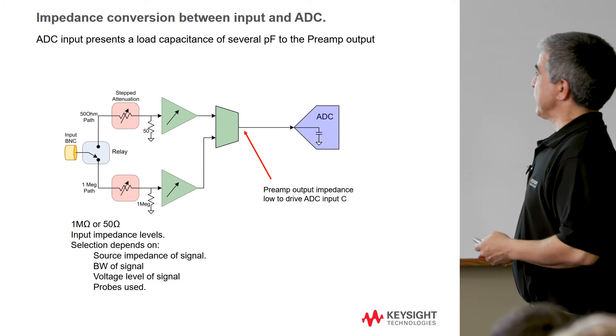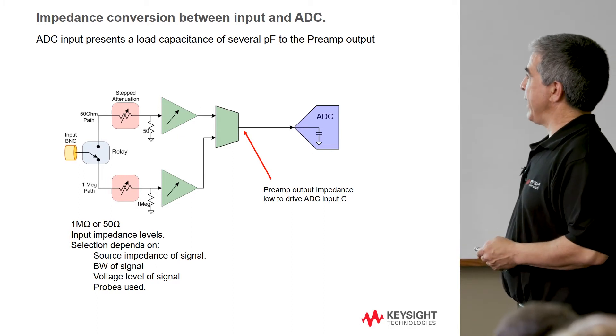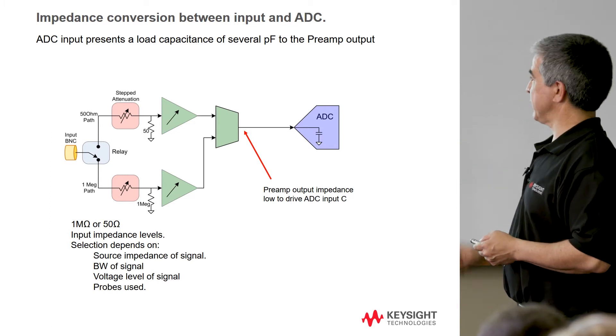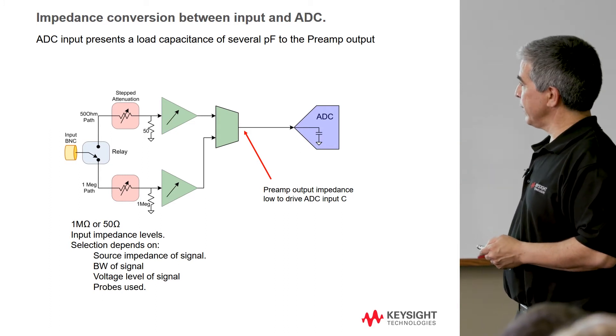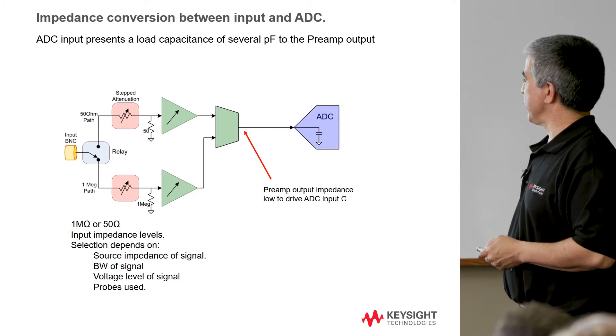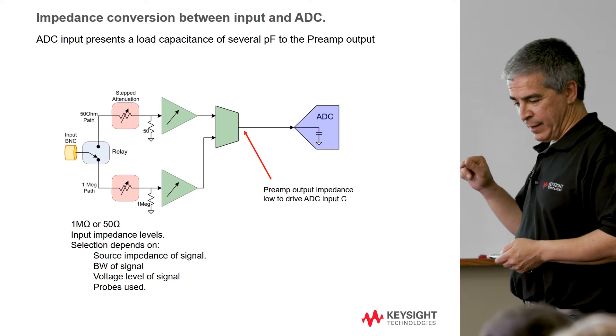So then we talked about impedance conversion. That allows you to ultimately drive the capacitance of the ADC. That's one of the other main functions that this guy needs to do. There is a 1 megaohm or 50 ohm selection relay here. There's usually a button, it might be a soft key on the storm where you hit that button and you'll see the input impedance and you'll hear a relay click where we're flicking a relay to set the signal to go to this guy.